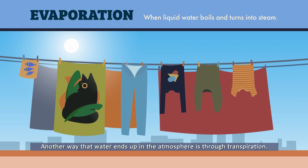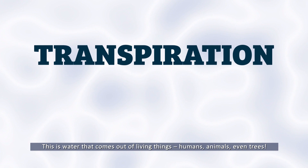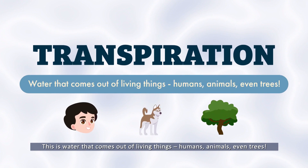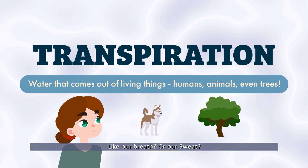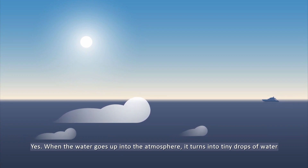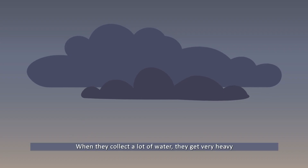Another way that water ends up in the atmosphere is through transpiration. This is water that comes out of living things — humans, animals, even trees — like our breath or our sweat. When the water goes up into the atmosphere, it turns into tiny drops and these form the clouds that fly all over the world.